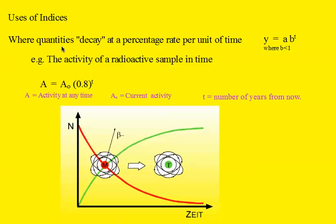Another thing that exhibits exponential decay is radioactive substances. Their activity at any time goes down at a constant rate. So, the activity at any time is the current activity times the base, again, a number less than 1, to the index of T, where T is the number of years.